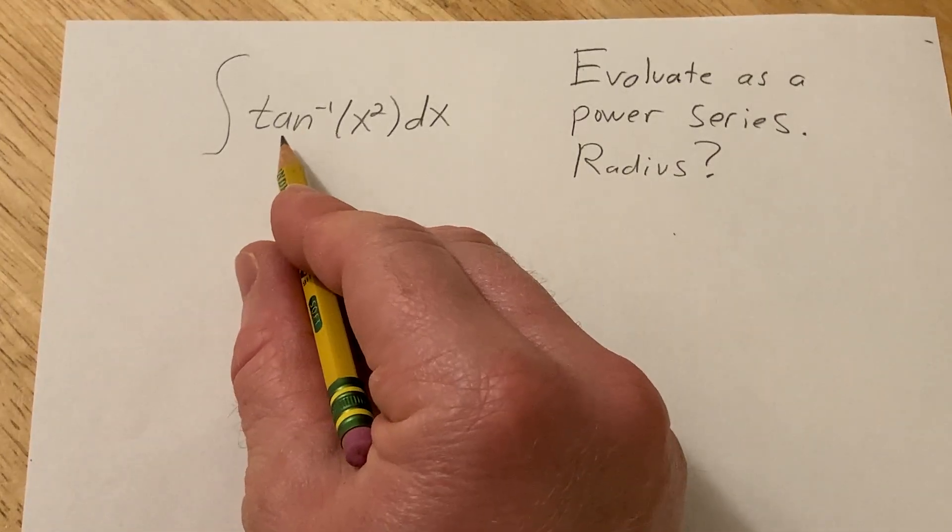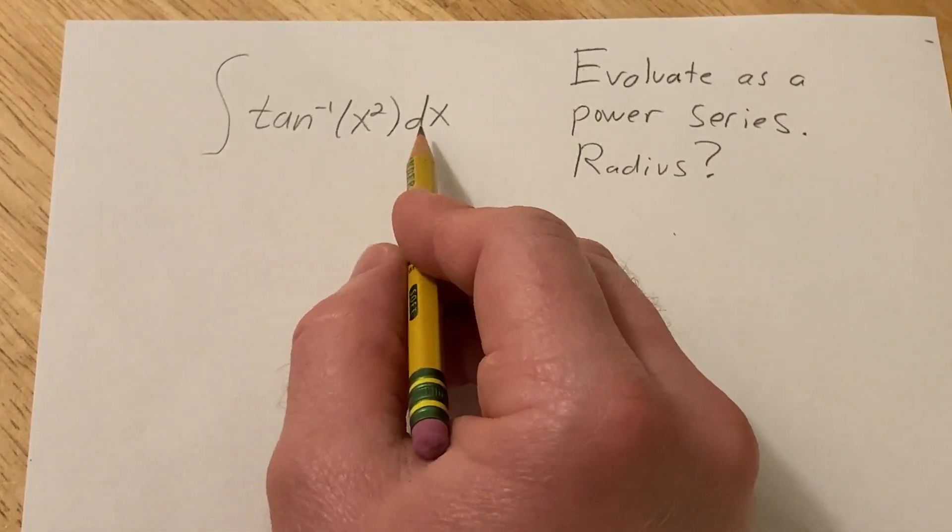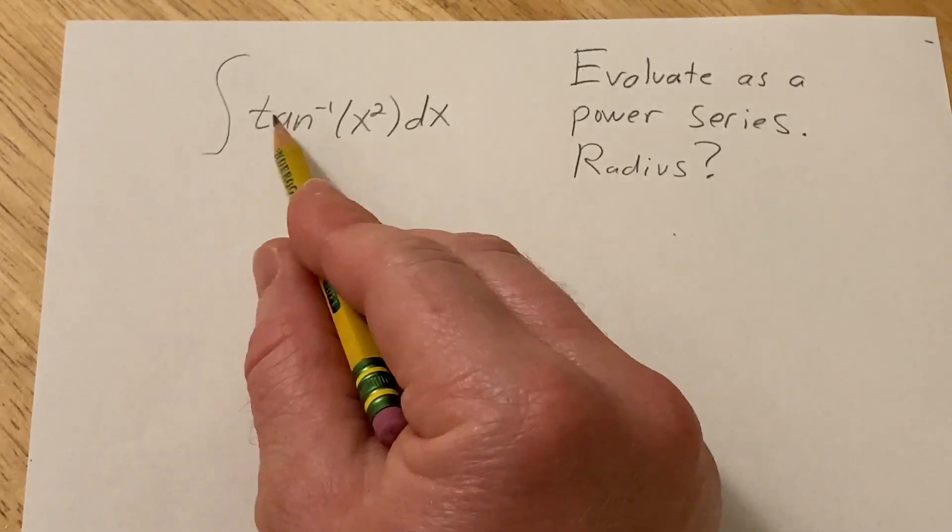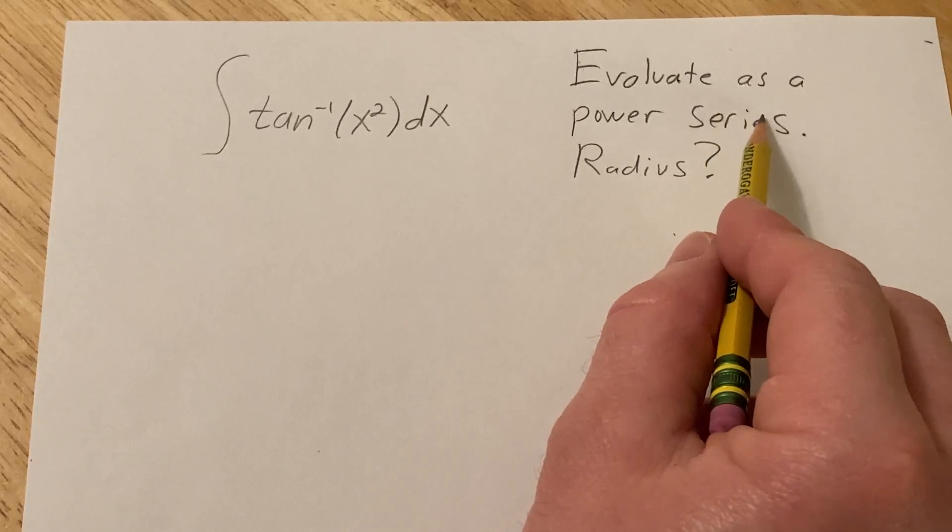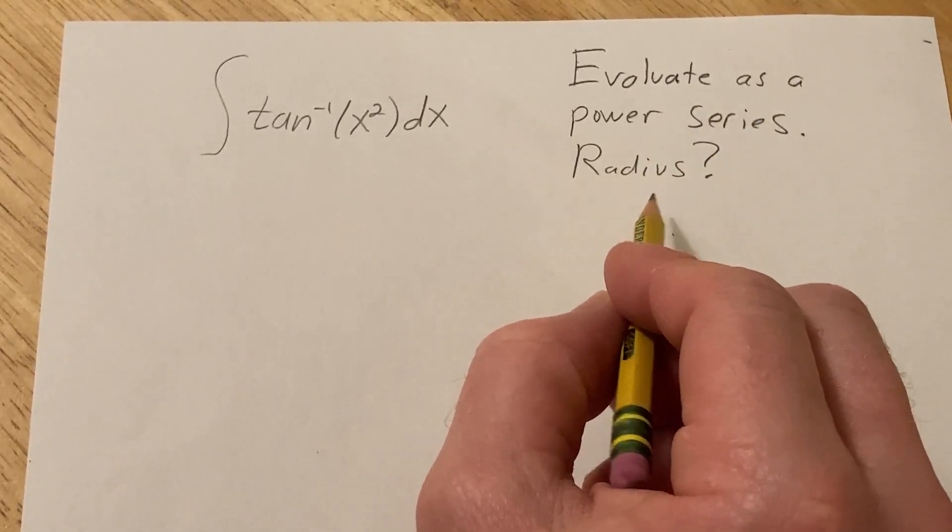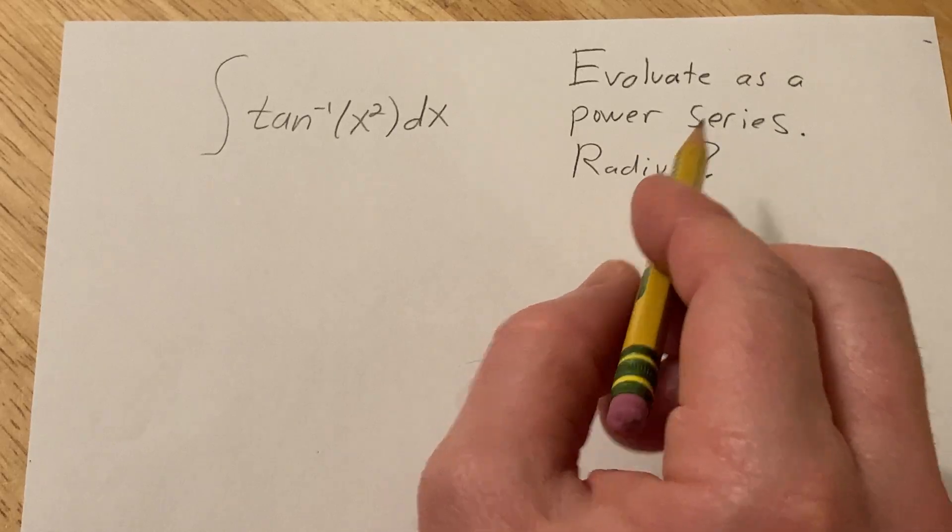Hi, in this video we're going to integrate the inverse tangent of x squared with respect to x. This is the same thing as the arctangent and we're going to do it by evaluating it as a power series and we're also going to find the radius of convergence.